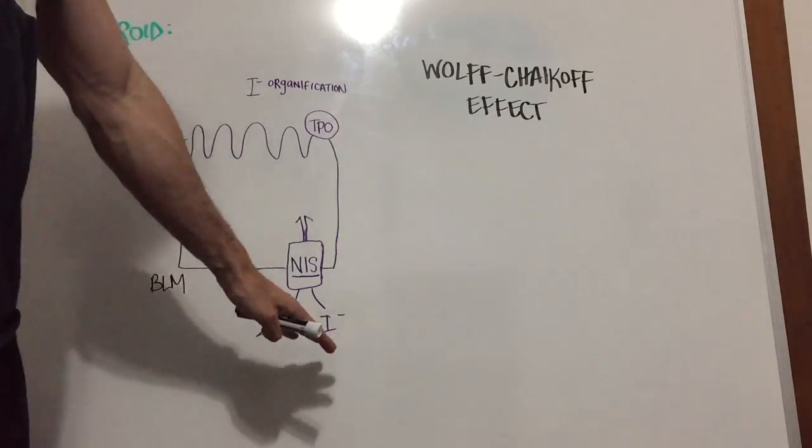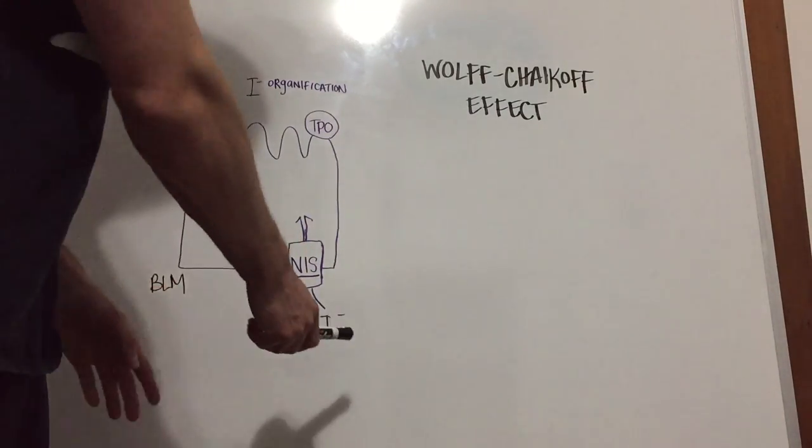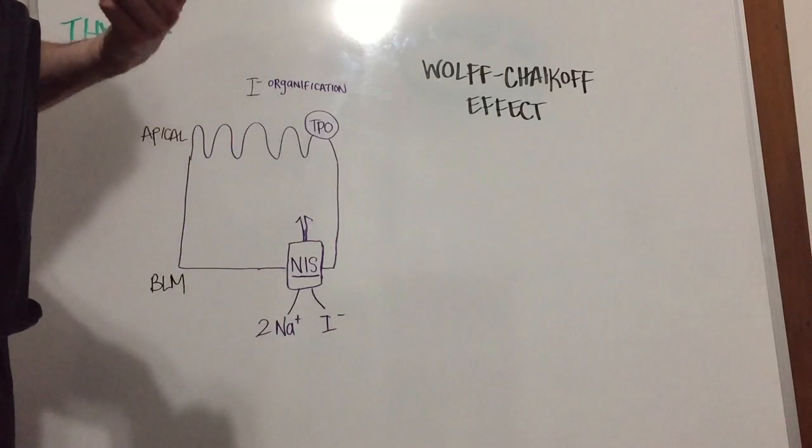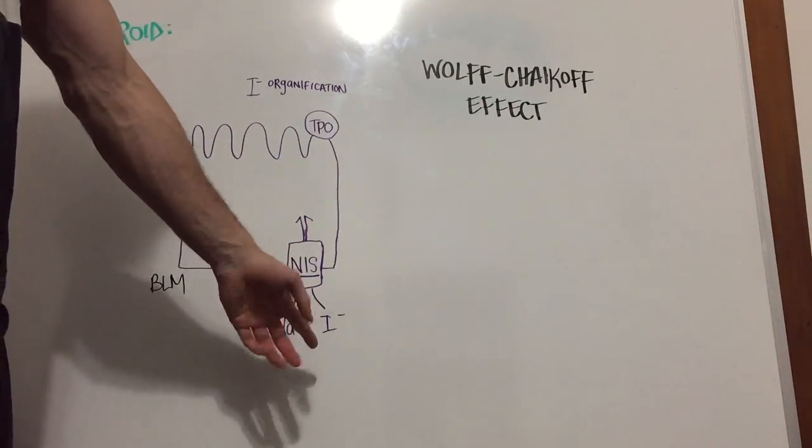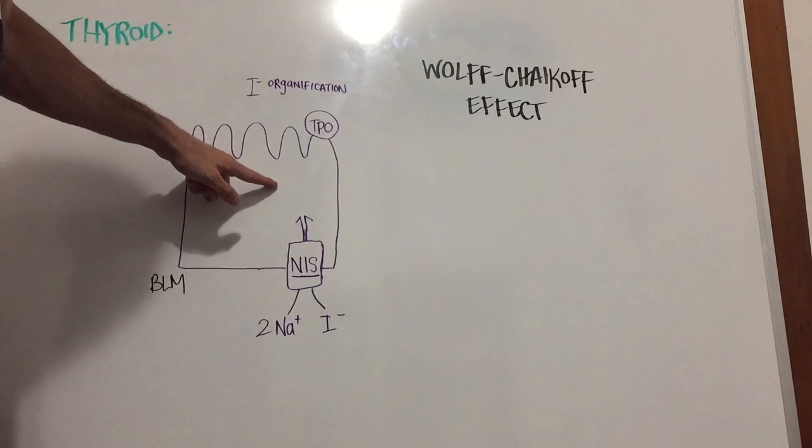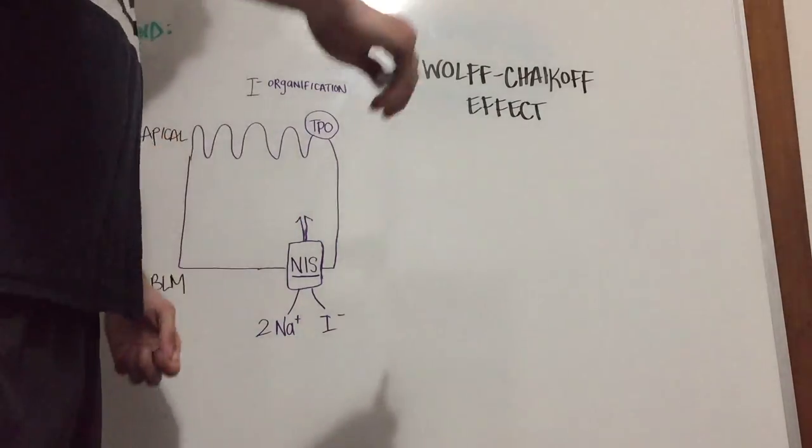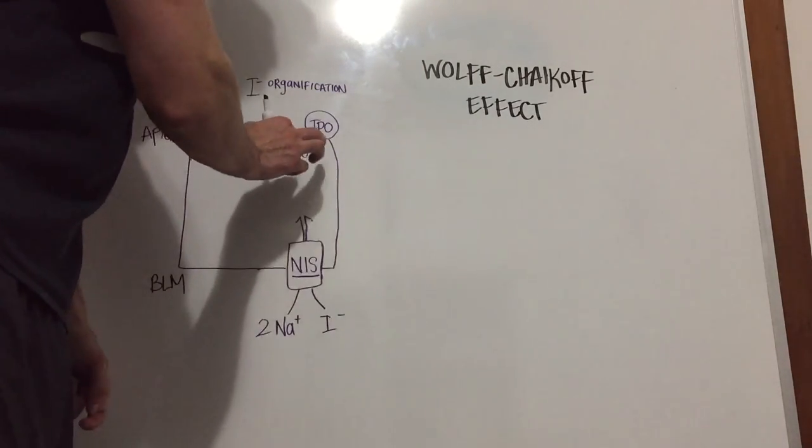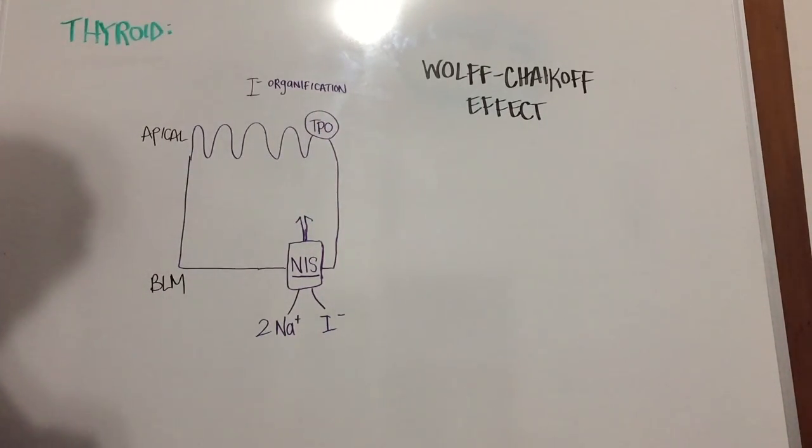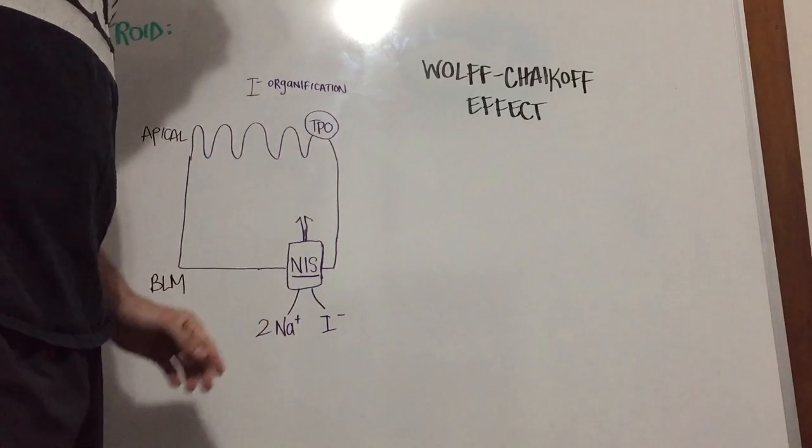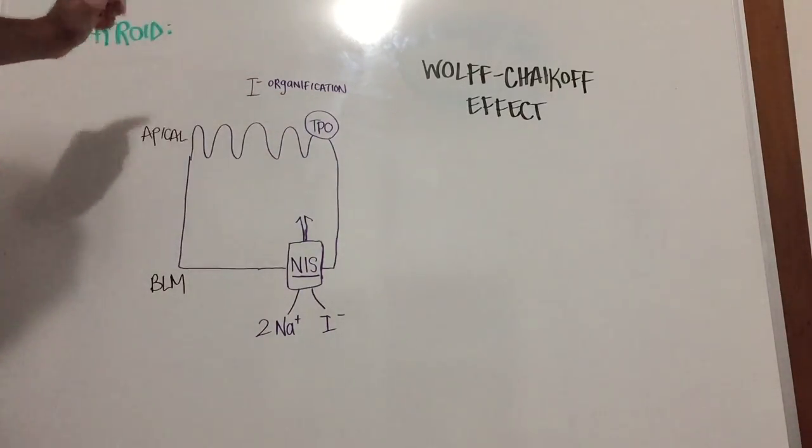What's later understood now is that when you have increasingly high levels of iodide, you are decreasing the mRNA of NIS. Decreasing this will reduce the amount of iodide that gets into the cell. Also exceedingly high levels of iodide are going to decrease the functionality and presence of TPO as well, and it will also reduce the vascularization of the thyroid gland.